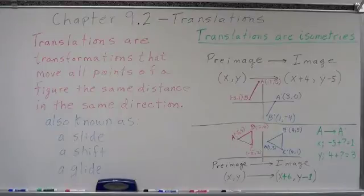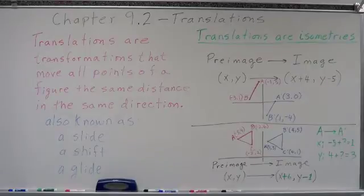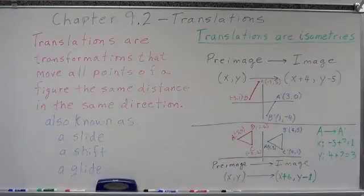Remember, translations are isometries — they are congruence transformations. They maintain congruency: same shape, same size.